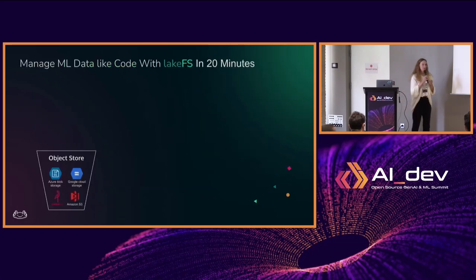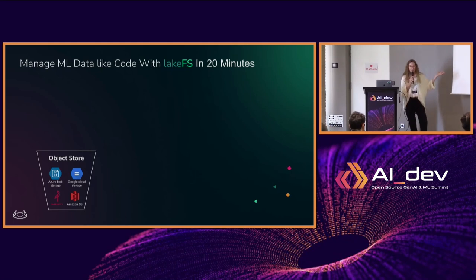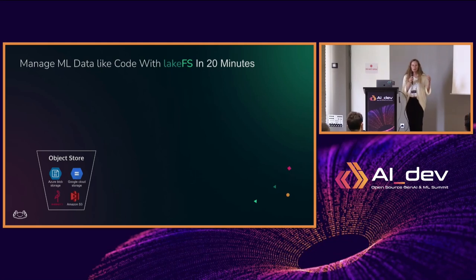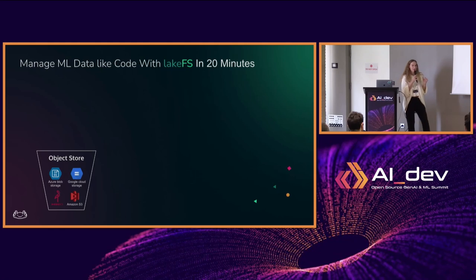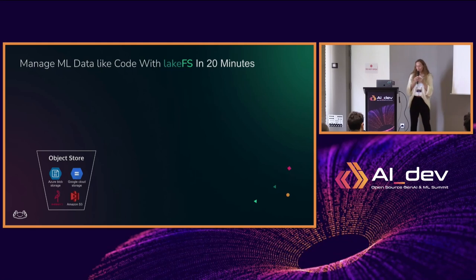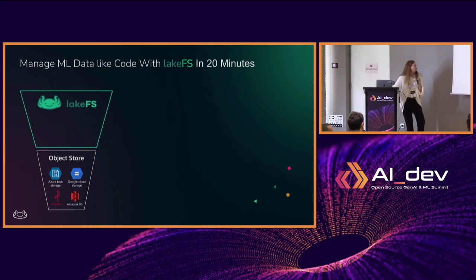So how do you manage data the way you manage code? You use an open source project — there are a few. I'll present one today that provides data version control: the concepts you have in Git, just implemented for data. For data saved on your S3 bucket, Google Cloud Storage, Azure Blob, MinIO — one of our favorite partners — wherever it is, you can version-control it there. LakeFS is the name of the open source project I'm presenting today.